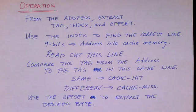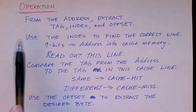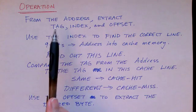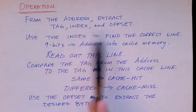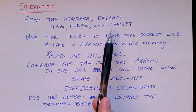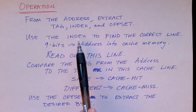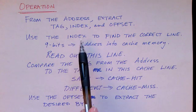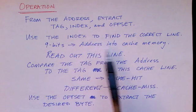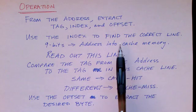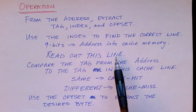So to repeat how the DirectMap cache works, the cache receives an address from the CPU. And from that 32-bit address, it extracts the tag, the index, and the offset. And then the cache uses the index. In our example, it's 9 bits. And it uses it as an address into the cache memory. And it retrieves the entire line from the cache.